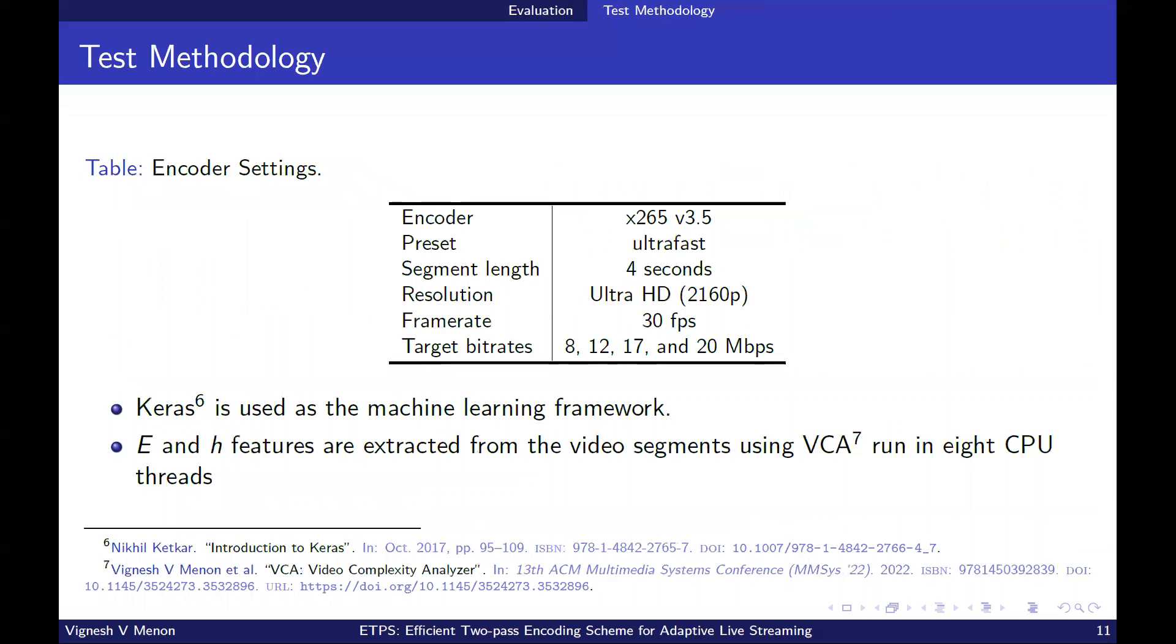Moving on to the evaluation of the proposed scheme. In this paper, the test sequences are encoded using x265 HEVC encoder with the ultrafast preset. The segment length is set to 4 seconds. The paper considers ultra HD resolution at 30 frames per second encoded with 8, 12, 17 and 20 megabits per second. Keras is used as a machine learning framework. 435 sequences are used as training data. The features are extracted from the video segments using VCA run in 8 CPU threads with x86 SIMD optimizations.